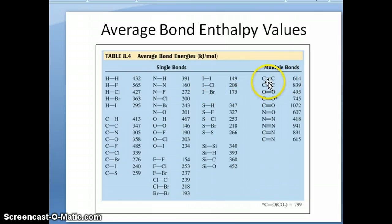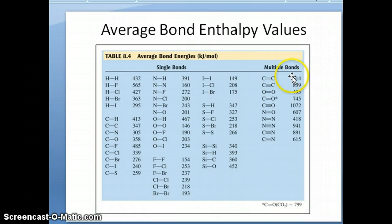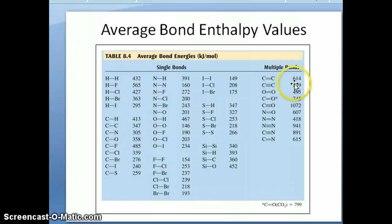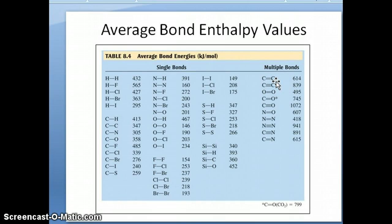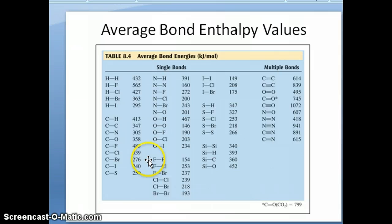For example, look at the carbon-carbon bond. The C-C single bond is about 347 kJ/mol, the C=C double bond is about 614, and the C≡C triple bond is about 839. Clearly, as you have more electron density between the two carbon nuclei, the energy required to break that bond increases. One thing to note: 614 is not exactly twice 347 — twice 347 would be around 690. We'll discuss this later in the context of valence bond theory, because the second and third bonds added are not exactly as strong as the first bond.